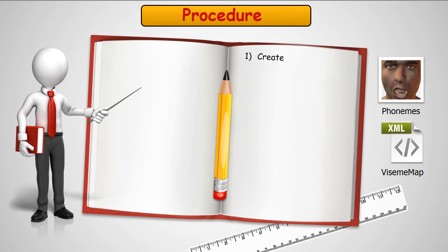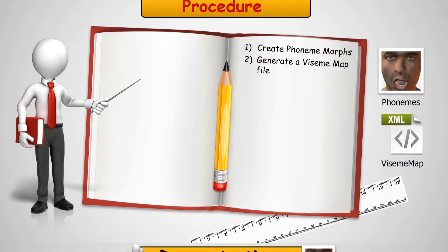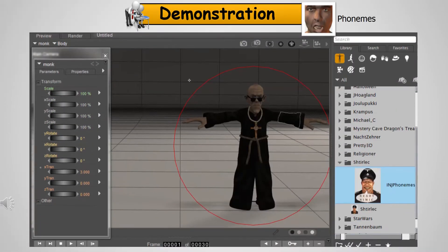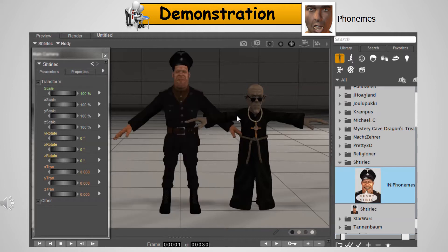We are going to create a set of phoneme morphs for the target figure, then take an existing viseme map file and customize it for the product — the Monk, as the figure is named within Poser. We are going to locate a similar character to model their phonemes for our target figure, who is already on stage.